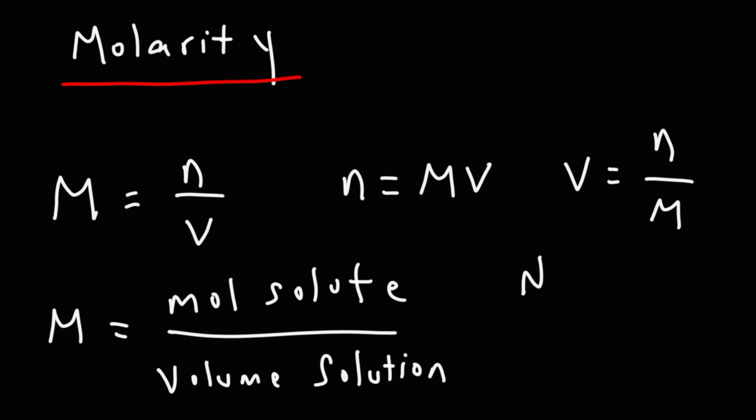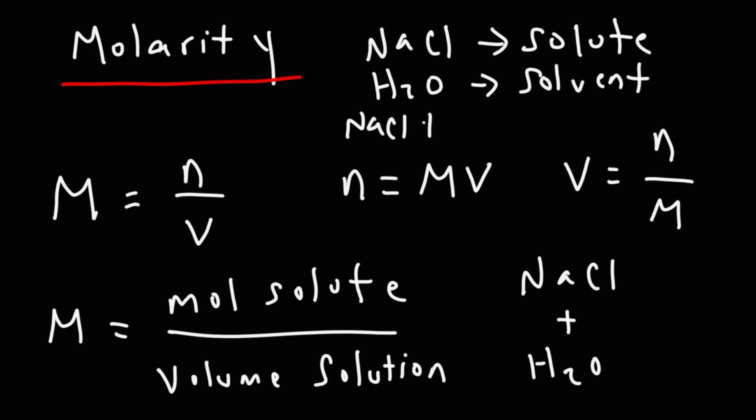So let's say if we take sodium chloride, table salt, and we put it in water. The sodium chloride will be the solute. It's the stuff that dissolves in the solution. Water is the solvent. The solvent dissolves the solute. When you combine them together, the mixture of these two forms the solution.